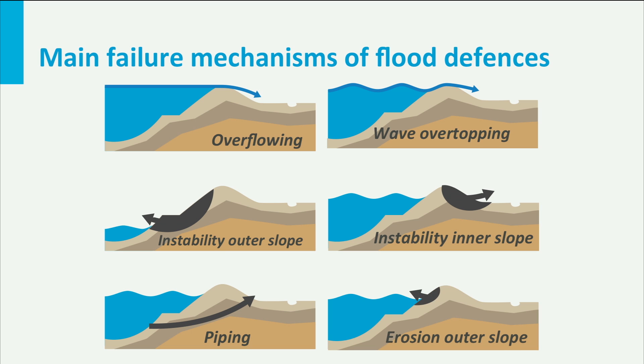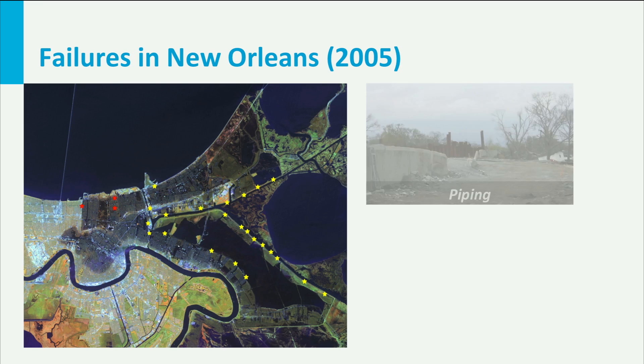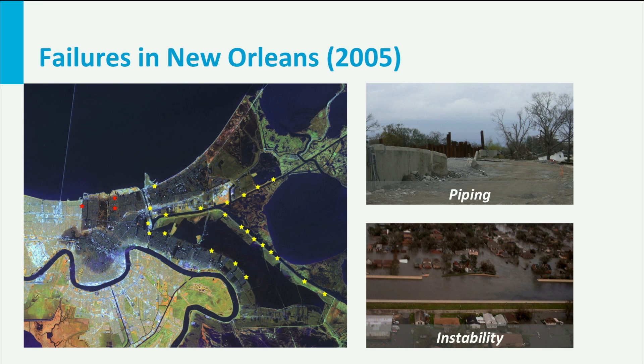The outer slope can be eroded due to wave attack on the dike as well. You can see that not only the height of the dike is important, but also its width, its soil characteristics, and its cover. The city centre of New Orleans was flooded during Hurricane Katrina in 2005, when the dikes in the centre failed due to instability and piping. This means that various failure mechanisms have to be taken into account when designing a flood defence system.